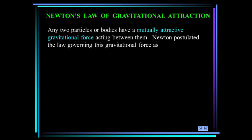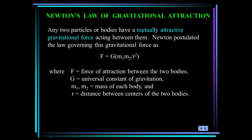Now you may have seen this in physics class. This is Newton's law of gravitational attraction. It says that any two bodies have a mutually attractive gravitational force acting between them. And he also gave us the formula for that. It is the gravitational constant times the product of the masses of the two bodies divided by the distance between them squared.